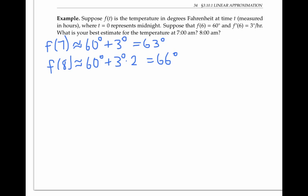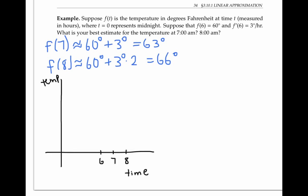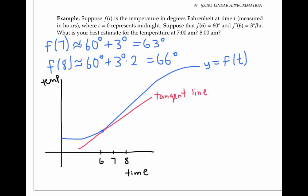Let's see what these estimates mean graphically in terms of the tangent line. I'll draw a rough graph of temperature over time, and I'll also draw in the tangent line at time six. At time six, the height of the function and the tangent line is equal to 60 degrees. The tangent line has slope three degrees per hour, so that's a rise over run of three, which means at seven o'clock — one hour after six — the tangent line has risen by three degrees, and at eight o'clock it has risen by another three degrees. So at seven o'clock our tangent line has height 63 degrees, and at eight o'clock our tangent line has height 66 degrees.